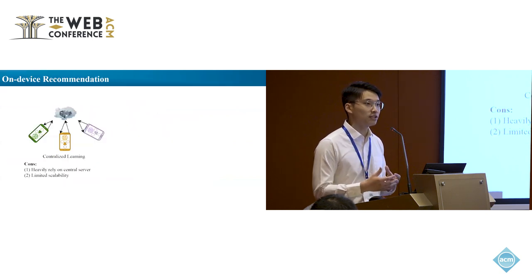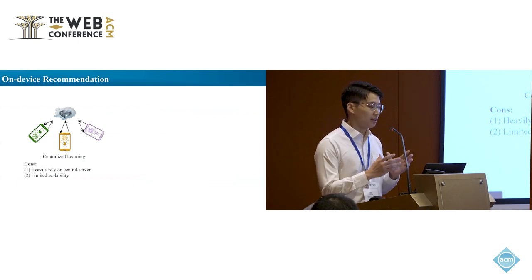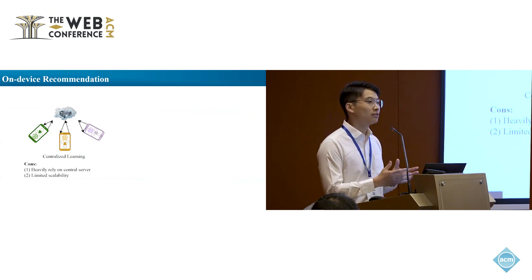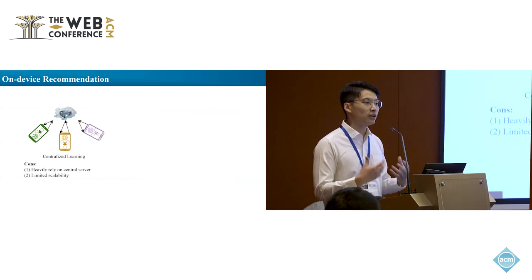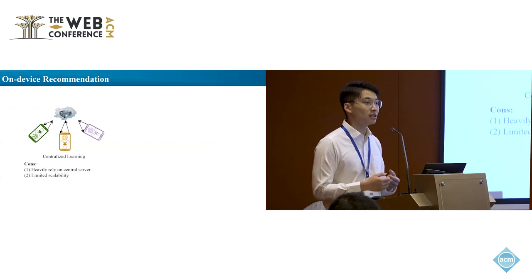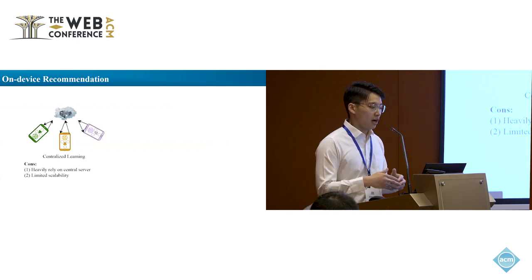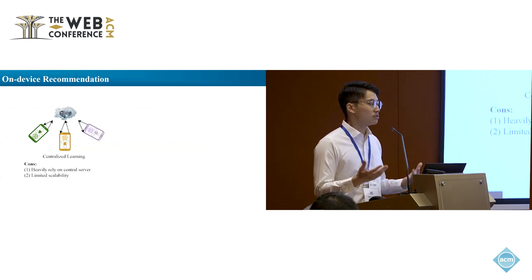Therefore, we have On-Device Recommendation, where we move the model from the cloud side to the device side. Centralized learning is one method, where we have a model on the device side, and each device uploads its gradients or parameters to the cloud server. The cloud server also has a model, which aggregates and redistributes the model back to the device side. Disadvantages of this centralized learning paradigm include heavy reliance on the cloud server — if the server is shut down, learning is impossible. Furthermore, because every user must communicate with the central server, in real-world applications with thousands or millions of users, this paradigm has limited scalability.